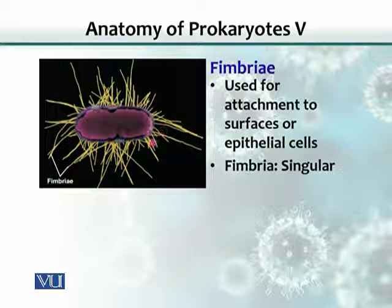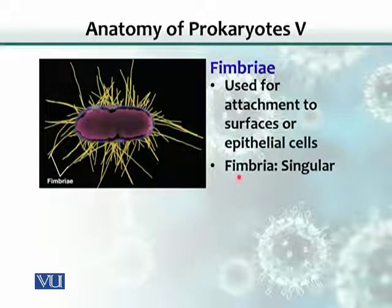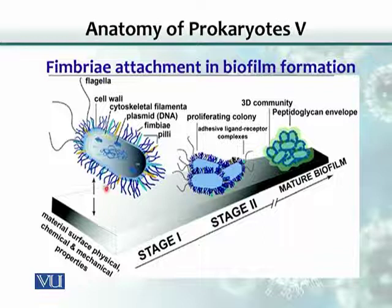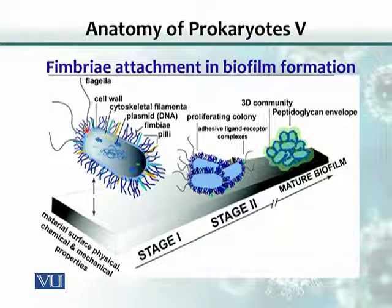The purpose of fimbriae is to attach to surfaces. Bacteria use these appendages to attach themselves to various surfaces, such as epithelial cells or surfaces in water streams. The fimbriae enable bacteria to adhere to a surface and proliferate as colonies, establishing and living as colonies.